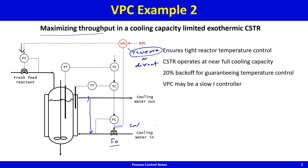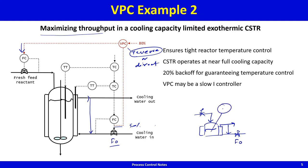This valve positioning control scheme ensures tight reactor temperature control, because reactor temperature control is always through the cooling circuit. One might consider instead keeping the cooling valve fully open and controlling reactor temperature by adjusting the fresh feed, but the problem with this alternative is the possibility of reaction runaway.